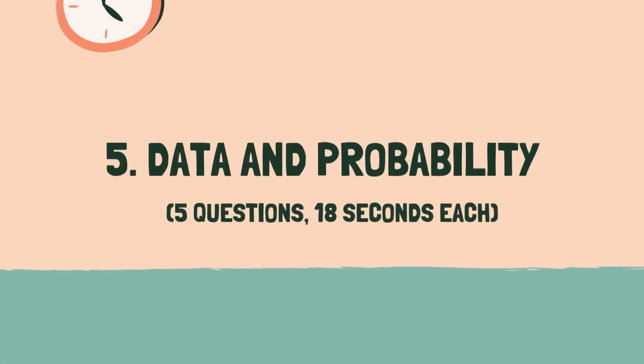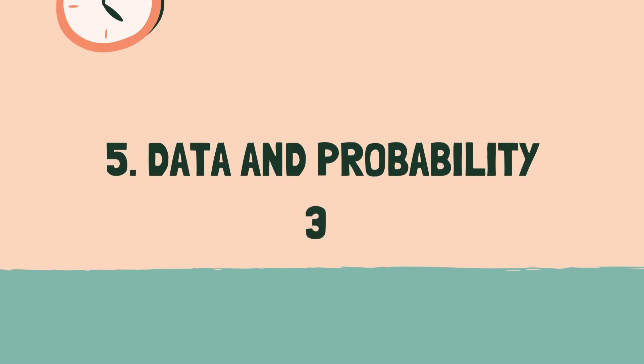Category 5: Data and Probability. 3, 2, 1, go.